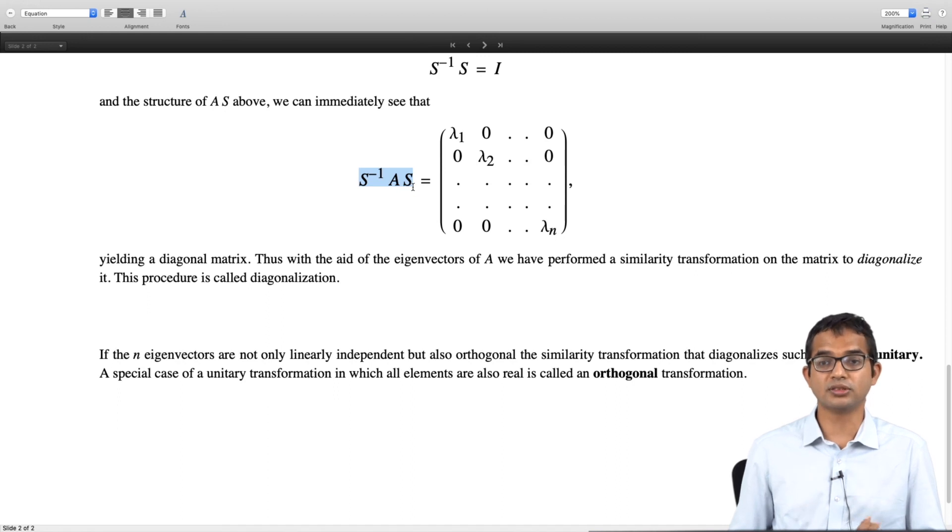This imposes some more constraints on the nature of your final diagonal matrix of your system. So unitary transformation is a special class of similarity transformation and there is another kind of transformation which is a special kind of unitary transformation and that is called an orthogonal transformation when you are dealing with real numbers.